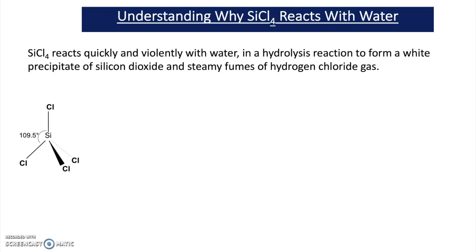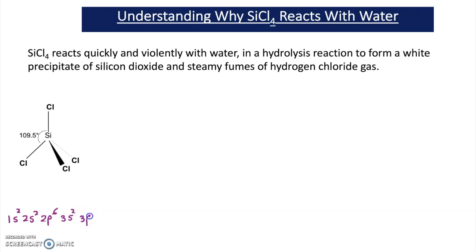Now let's look at why silicon tetrachloride reacts with water. To do this, we need to look at the bonding in silicon tetrachloride. Silicon's electron arrangement is 1s², 2s², 2p⁶, 3s², 3p².